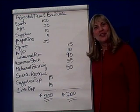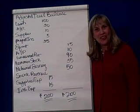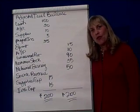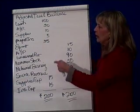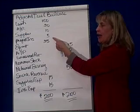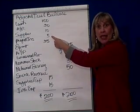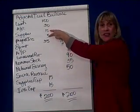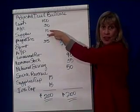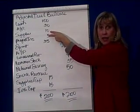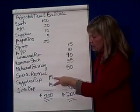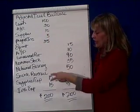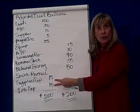Financial accounting. We've been looking at adjusting journal entries, and remember there are four different kinds. The first is where we look at our supplies account and our prepaid accounts, such as prepaid insurance, and we ask how much of this has been used or expired. We move the amount that's used or expired out of the asset accounts and into the expense accounts.